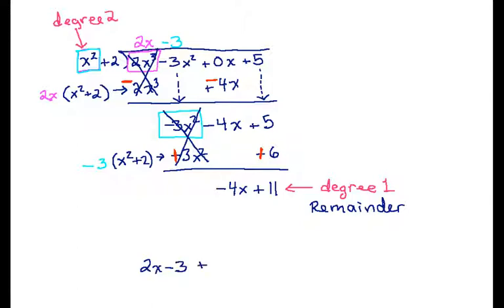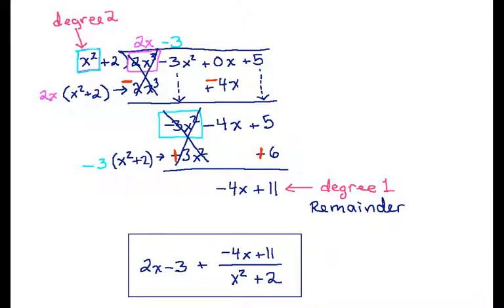So I'll write my final answer as quotient, which is 2x minus 3, plus remainder, which is negative 4x plus 11, over divisor, which is x squared plus 2. And that is polynomial division.